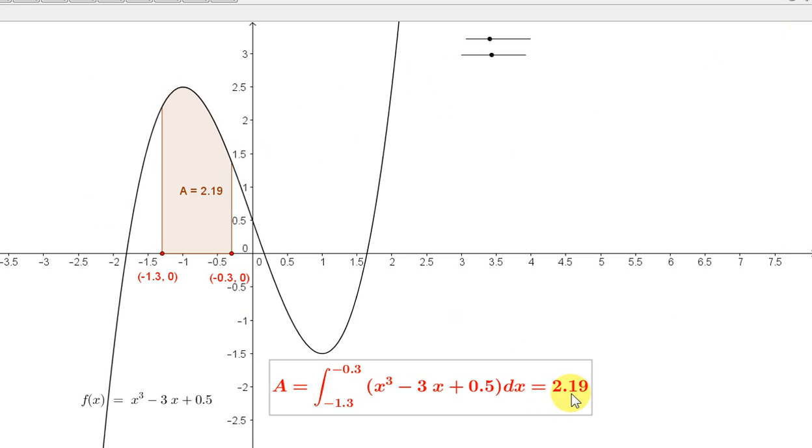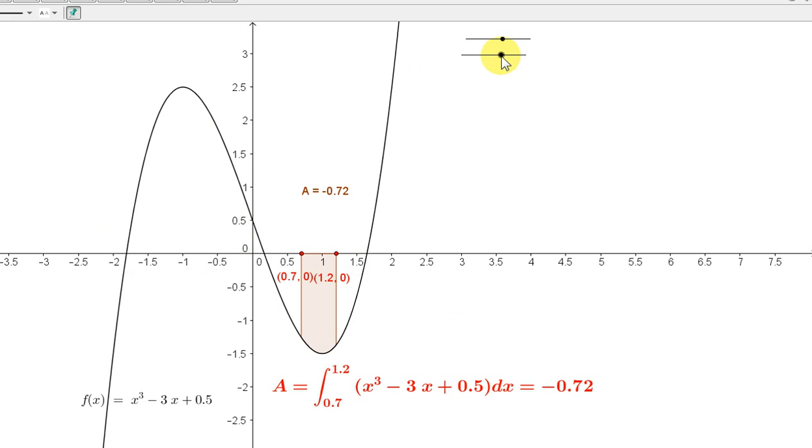Now notice that the answer came out to be positive. Now it's possible to get a negative value for a if we move the limits of integration over here. So let's make the lower limit 0.5 and the upper limit 1.3. Notice that the area is minus 1.06.